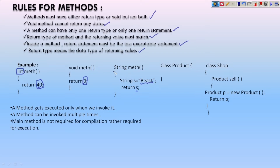A void method returns nothing, or just zero — that is void. A string method: string yes equals 'beast', return yes — since yes is a string, the return type is string. For class Product, the method 'sell' returns a Product object: Product p equals new Product, and p is returned — so the return type is Product. These are the return type rules matching the value being returned.